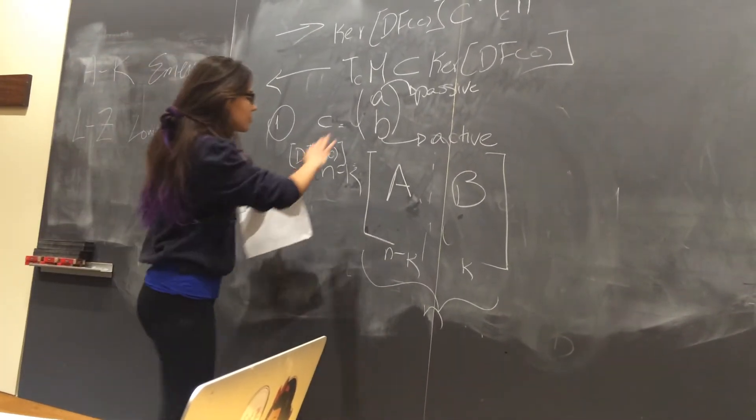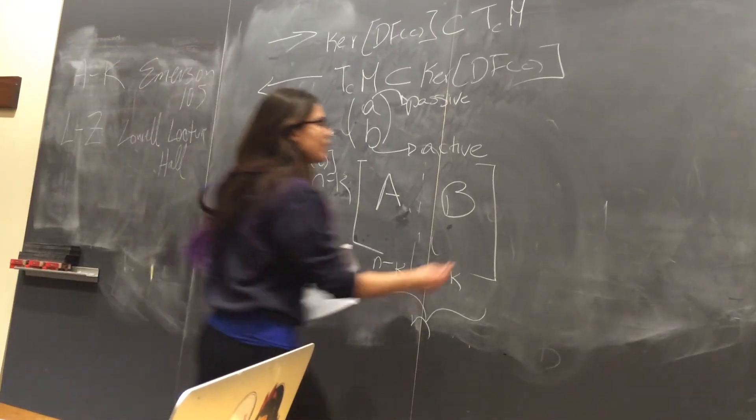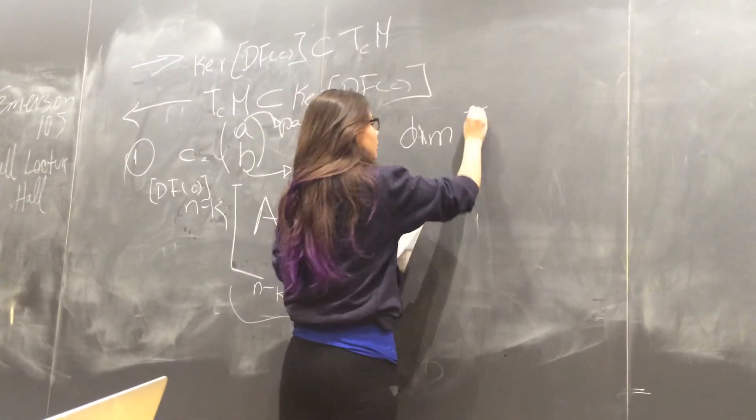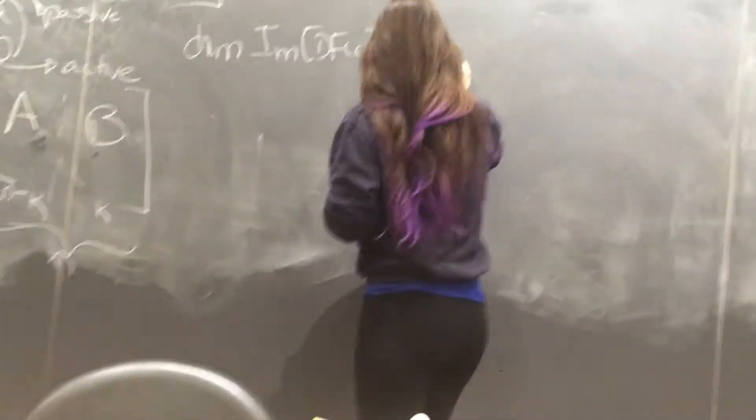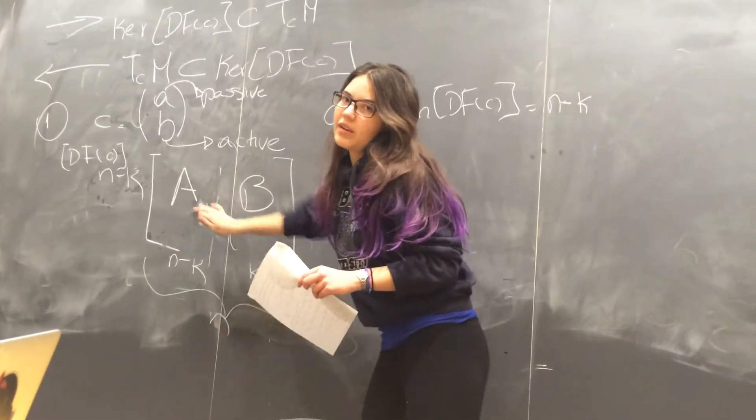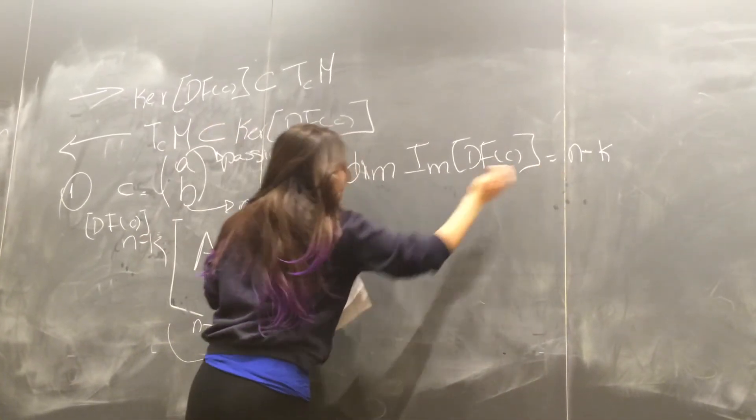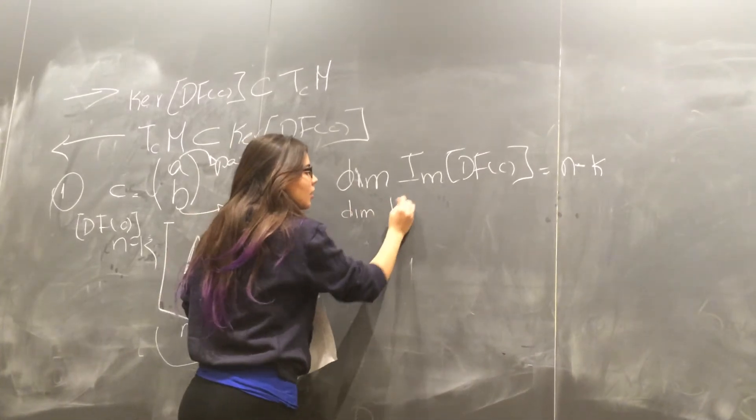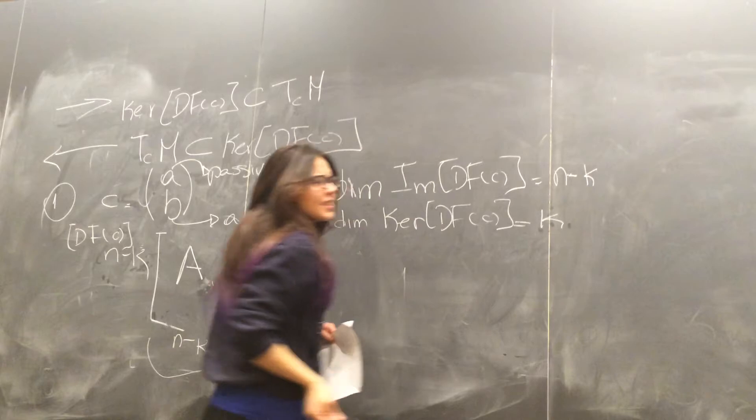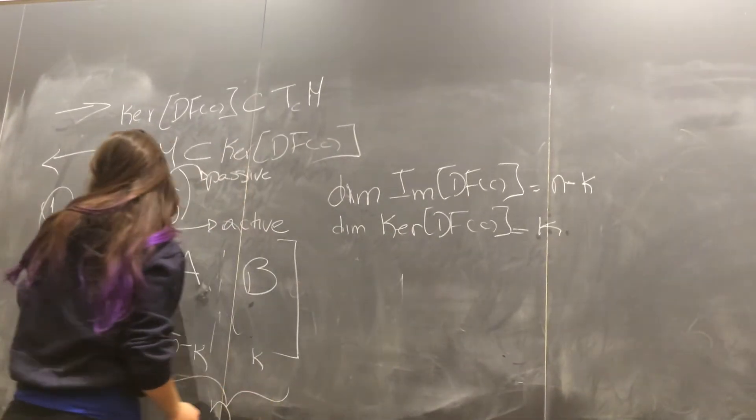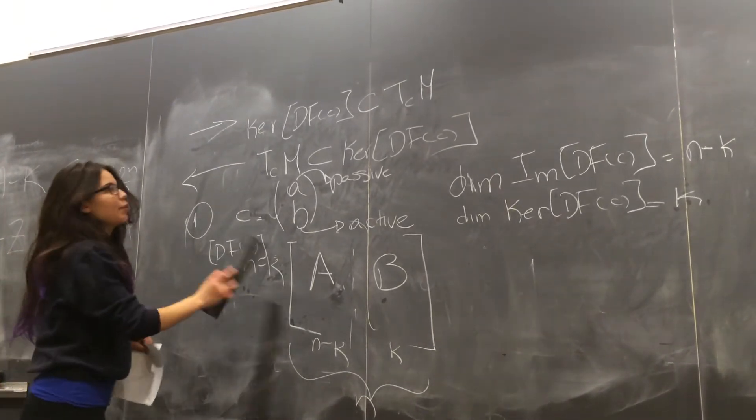This is going to be N minus K because our graph is from N to N minus K, and this is the input and this is the output. Then we have the dimension of the image of DFC is N minus K because this is onto, referring to the number of columns of A. And if the dimension of the image is N minus K, then of course the dimension of the kernel of DFC is going to equal K because of the rank-nullity theorem. Now I'm going to prove the first part, and this is the preparation for both of these parts.